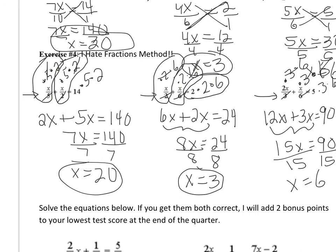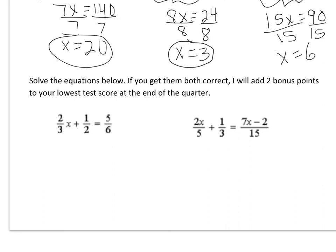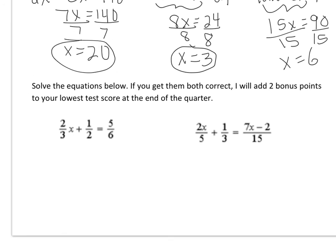Down here there's extra credit — I told you I was going to sneak in some extra credit opportunities. I want you to try and solve these equations below, and this is what you'll come into class and show me next time. If you get both right and show all your work, I'll add two bonus points to your lowest test score at the end of the quarter. Please try these on your own and show me your completed notes plus your attempt at these two equations. Have a great night and I'll see you next class.